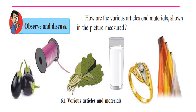Observe and discuss. Look at these pictures, children. First we find brinjals here. Those come under the category of vegetables. Then we find thread, a bunch of leafy vegetables, milk, there is a gold ring here with some diamonds, and we have bundles of cloth.